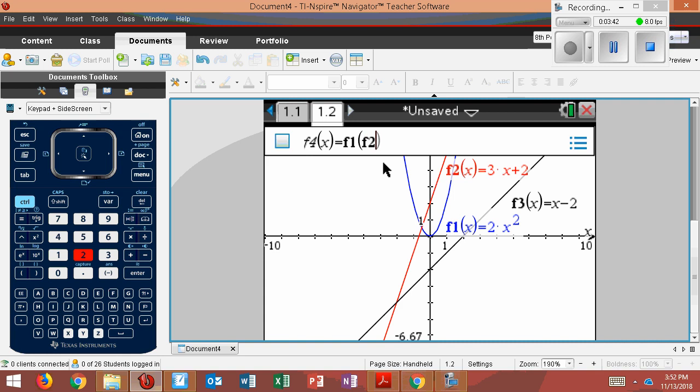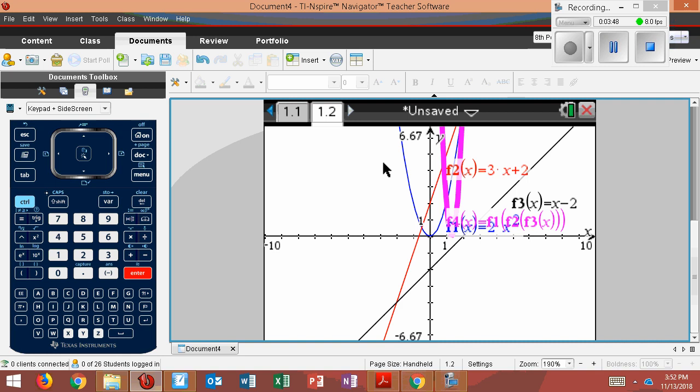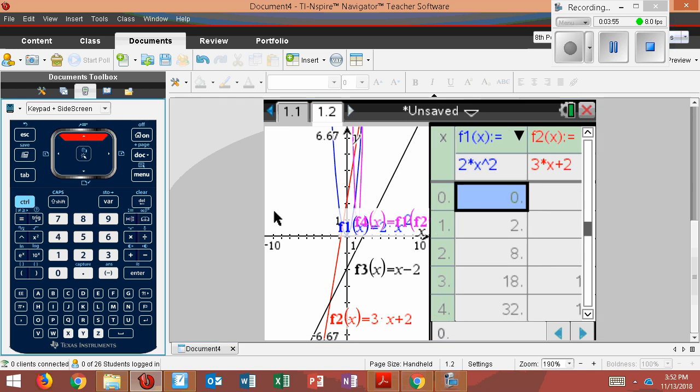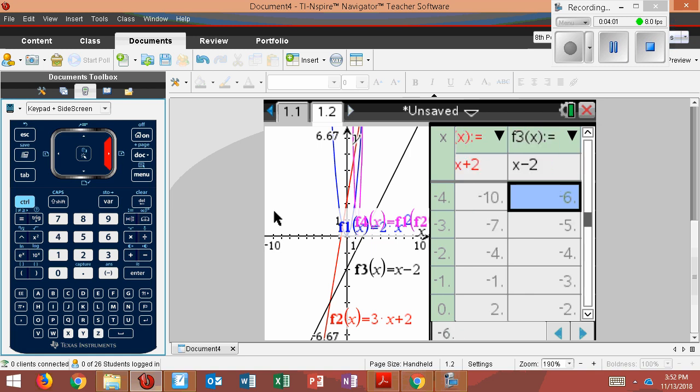parentheses, and put an x there. I press Enter. If you press Control-T to get a table, we want to know what's the value when x is negative 4. I go to negative 4, and I go over to my equation that was f1 of f2 of f3. And you can see that's 512. So that's just multiple ways of doing the same thing.